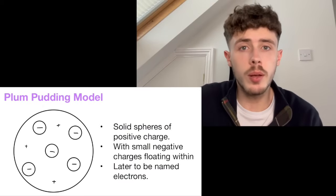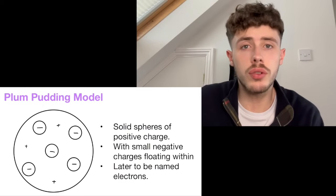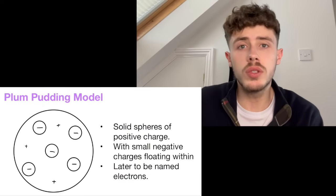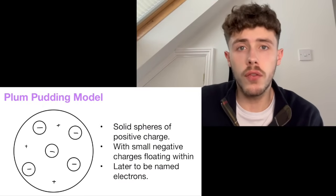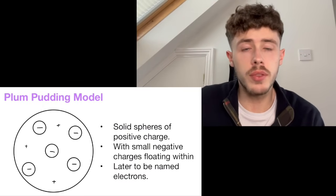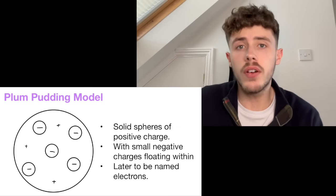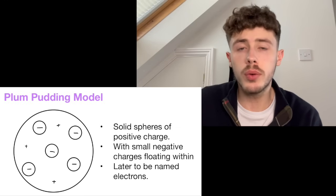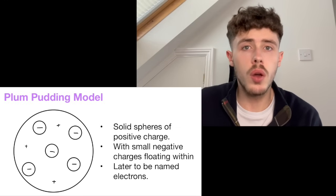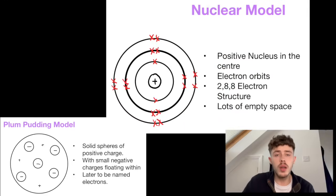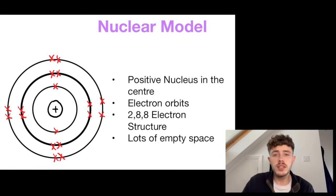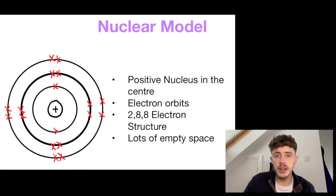Still within this topic, you need to know about the plum pudding model and the history of the atom. The plum pudding model was the original form of the atom that scientists believed to be true. However, after multiple experiments, we are now left with the nuclear model, which contains the existence of subatomic particles such as the proton, neutron, and electron.